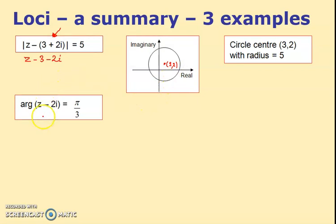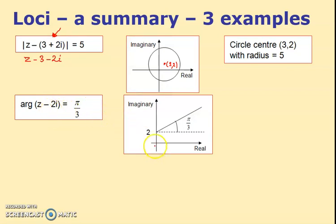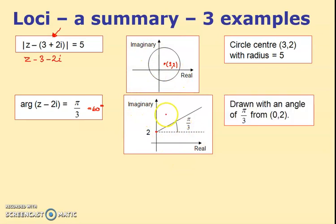Secondly we have these arguments, so argument of z minus 2i. Now it hasn't got a real part here—usually it does—but this particular one, because it hasn't, you would just go 2 up. Normally it's a bit left or right as well. And it says it's equal to π by 3. So notice you draw your dotted line and your angle. π by 3 I know is roughly meant to be 60 degrees. So it's a line drawn at an angle of π by 3 from (0,2).